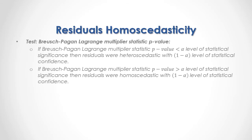What we are testing is the Breusch-Pagan Lagrange multiplier statistic p-value. If the Breusch-Pagan Lagrange multiplier statistic p-value was less than the alpha percentage level of statistical significance, then residuals were heteroscedastic with 1 minus alpha percentage level of statistical confidence. On the other hand, if the p-value was greater than alpha, then residuals were homoscedastic with 1 minus alpha percentage level of statistical confidence.